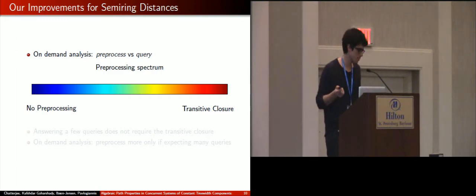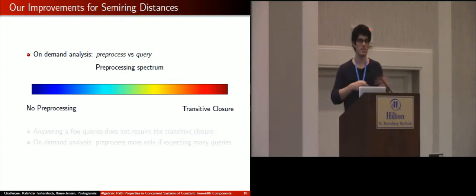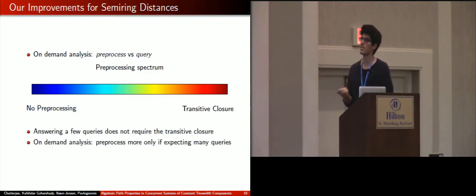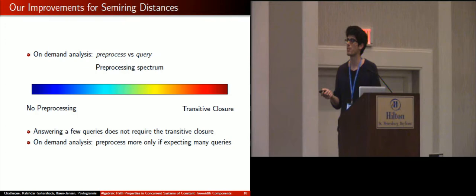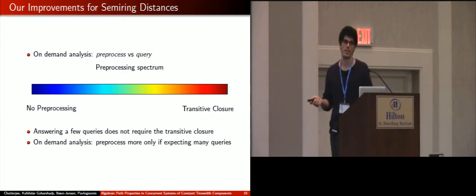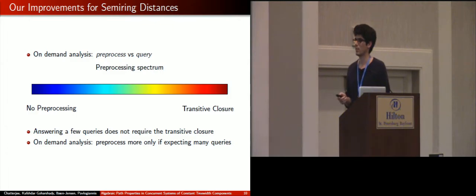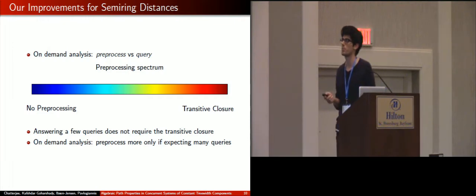Now, in on-demand analysis, the goal is to, instead of solving the all pairs problem, we want to spend only some time pre-processing our input so that afterwards, when we are presented with a number of distance queries, we can answer them in reasonable time, using the information we computed during the pre-processing phase. And what we saw is that if you only need to answer a few queries, you don't need to take the transitive closure. And in fact, we offer a range of trade-offs between pre-processing and query time, which is tailored to on-demand analysis, depending on the number of queries that you need to solve your problem for.